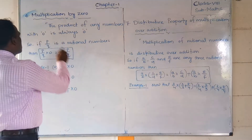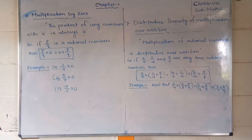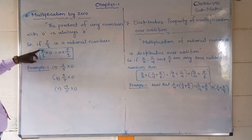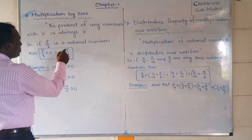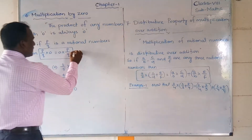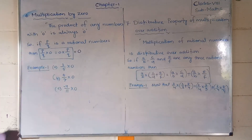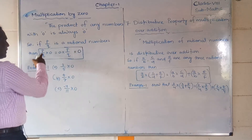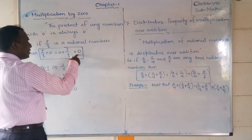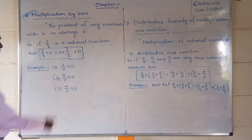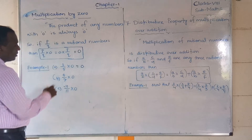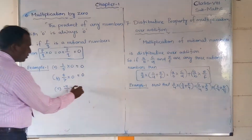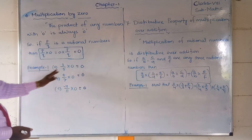So if p/q is a rational number, then p/q × 0 = 0 × p/q = 0. The answer is always 0. For example: 3/5 × 0 = 0, and 4/7 × 0 = 0, and -4/11 × 0 = 0. Any rational number multiplied by 0 gives 0.